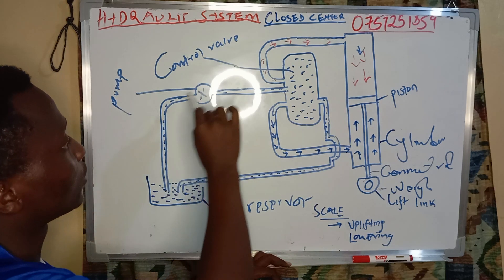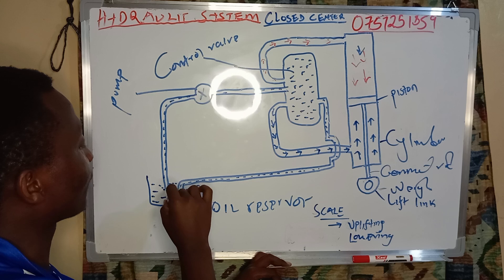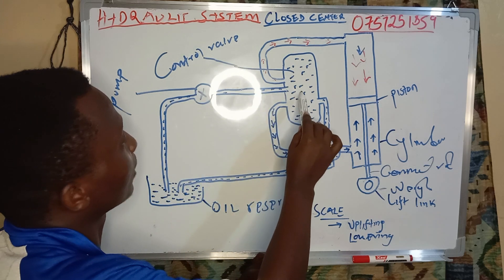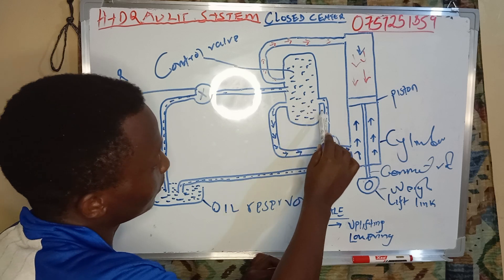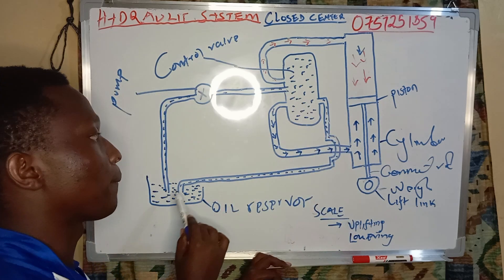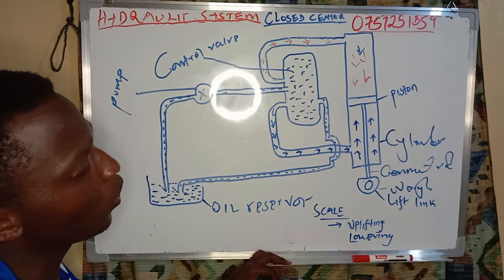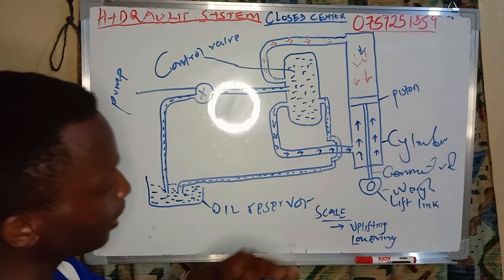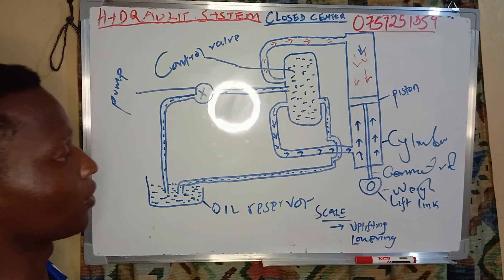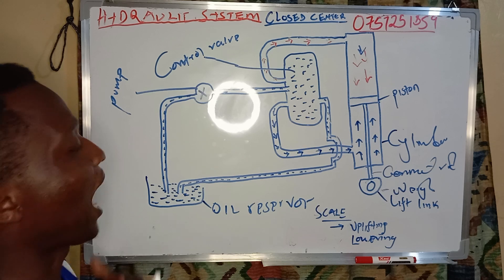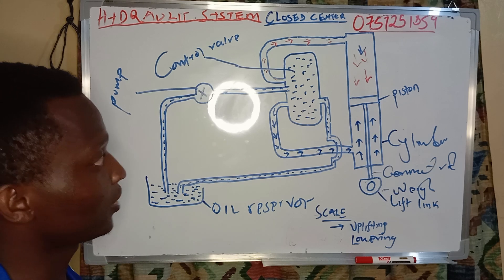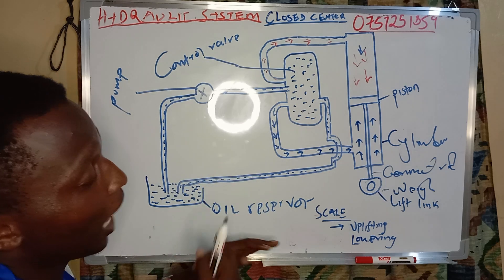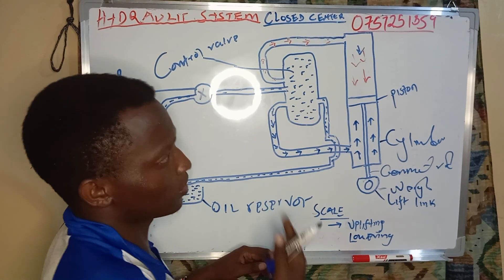So the oil is pumped to the control valve, gets inside, and moves just back to the reservoir. That's how the neutral position of the hydraulic system of a tractor works. Yes, I think we have understood — this is how simple and how it works.